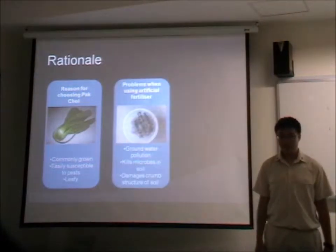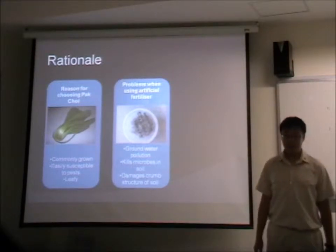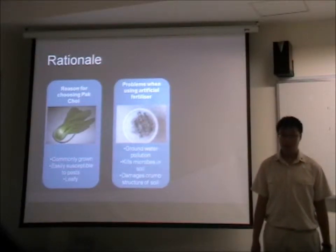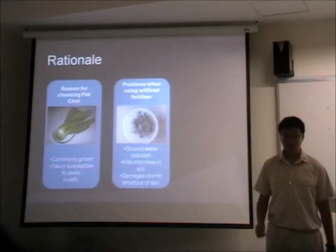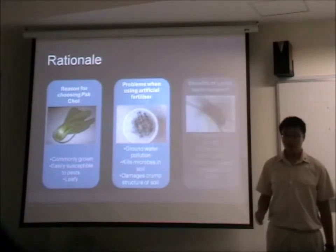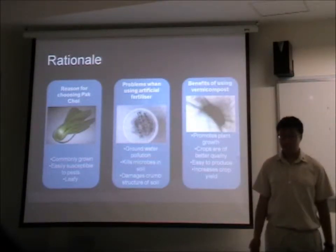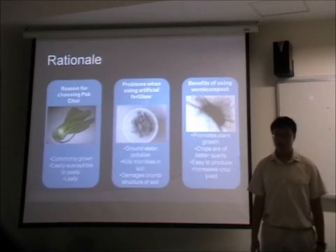We chose bok choy because it is very commonly grown and very susceptible to pests. Currently, farmers face issues when using artificial fertilizer, which uses up groundwater and kills the microbes in the soil that are beneficial for plant growth. We suggest that vermicompost is easy to produce and also promotes plant growth.